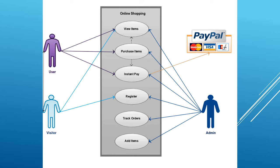This is how the e-commerce domain looks. It's basically a domain thing — how it works. A user will come, view the item, purchase the items, and instant pay — online shopping happens. A visitor sometimes comes, views items, registers, and then leaves. Some people come, check the price of an item, don't buy it, and think of buying it later — they can move it to a wishlist. There are also people who leave items in the cart without buying.